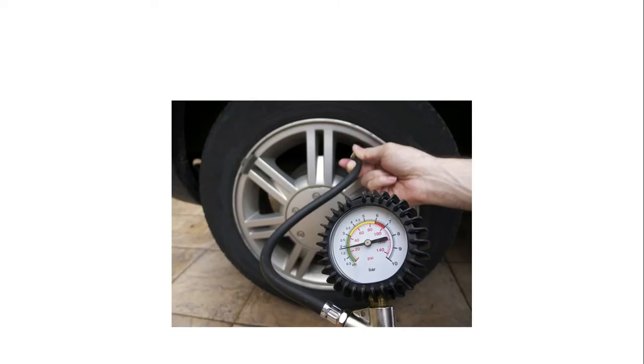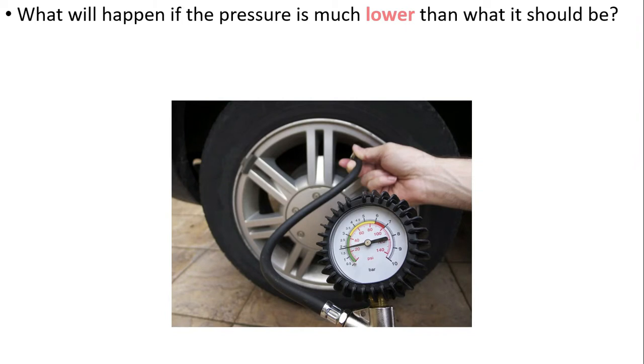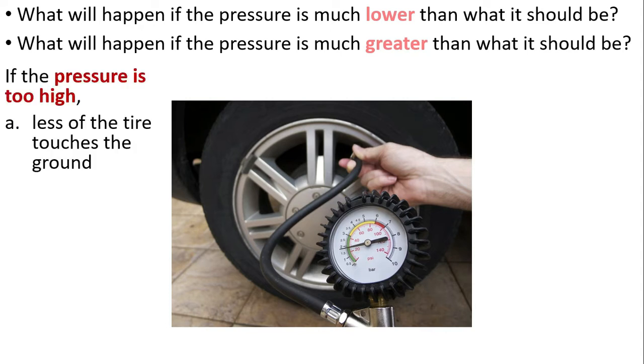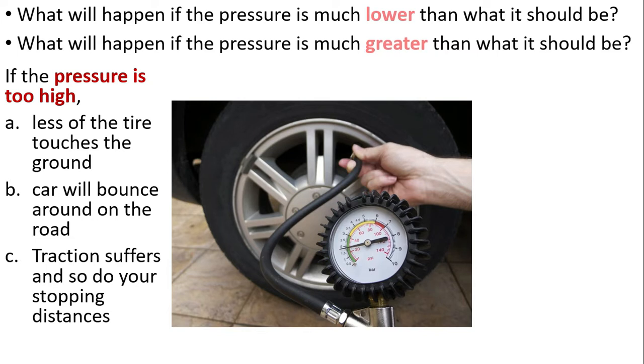One common example when dealing with pressure is pumping a tire. The question is, what will happen if the pressure is much lower than what it should be? What will happen if the pressure is much greater than what it should be? If the pressure is too high, less of the tire touches the ground. The car will bounce around the road. And when your tires are bouncing instead of firmly planted on the road, the traction suffers and so do your stopping distances.